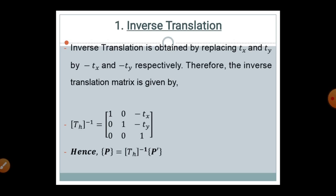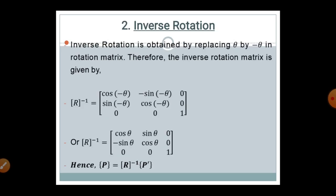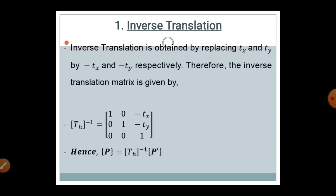Therefore, the inverse translation matrix in homogeneous coordinate system is: [1, 0, -TX; 0, 1, -TY; 0, 0, 1]. Hence, the function P equals to the inverse transformation matrix multiplied by the modified function P'. This is called inverse translation.